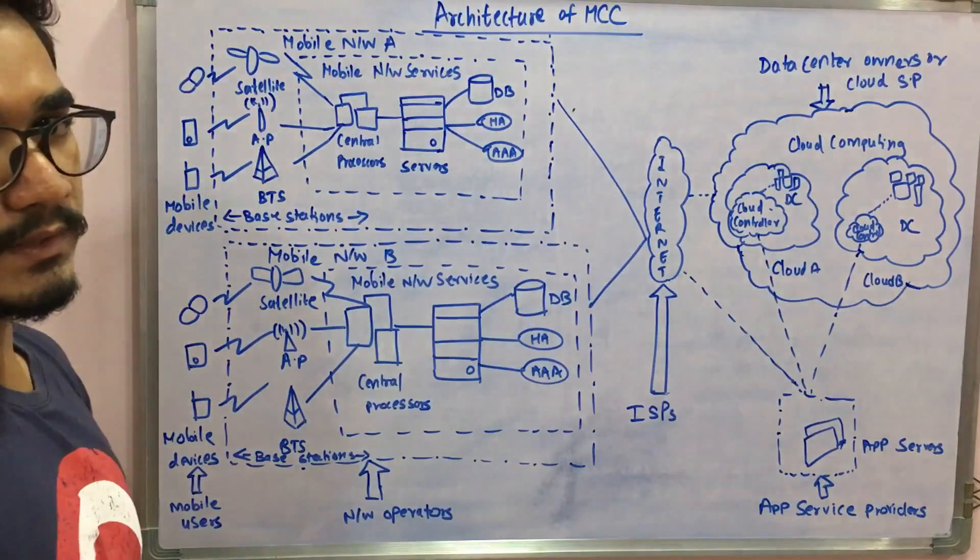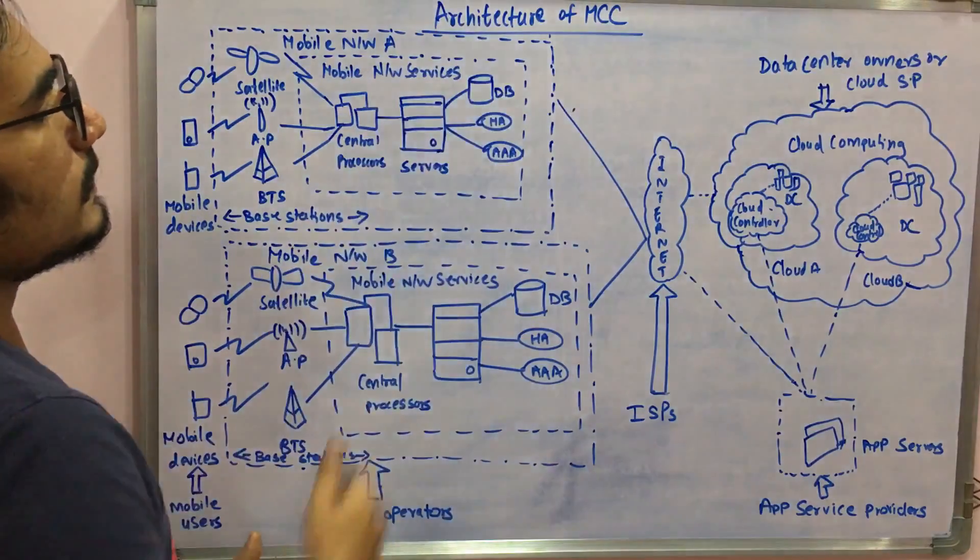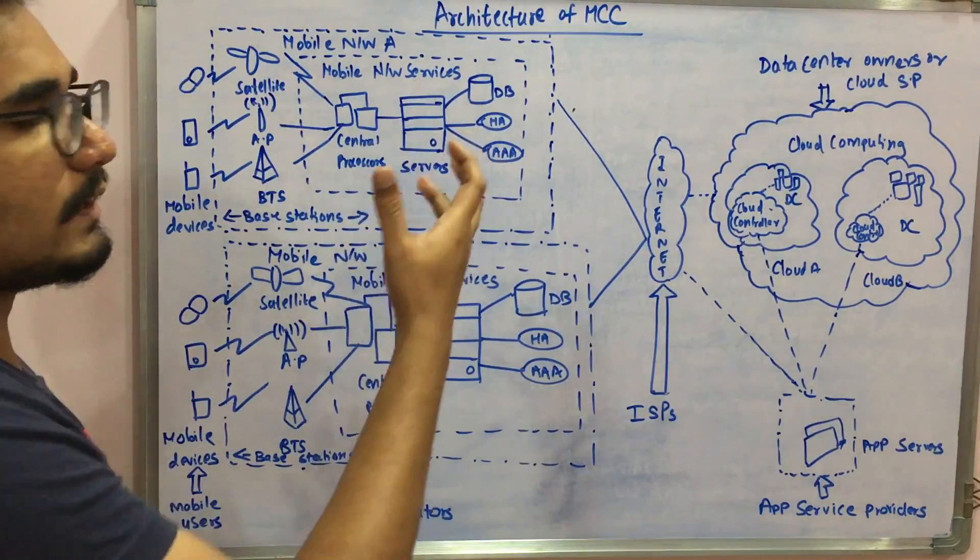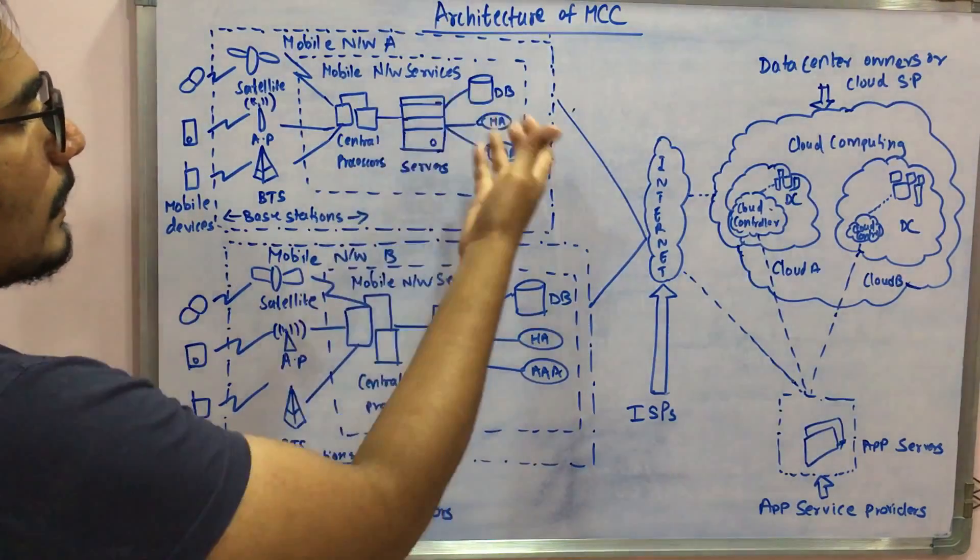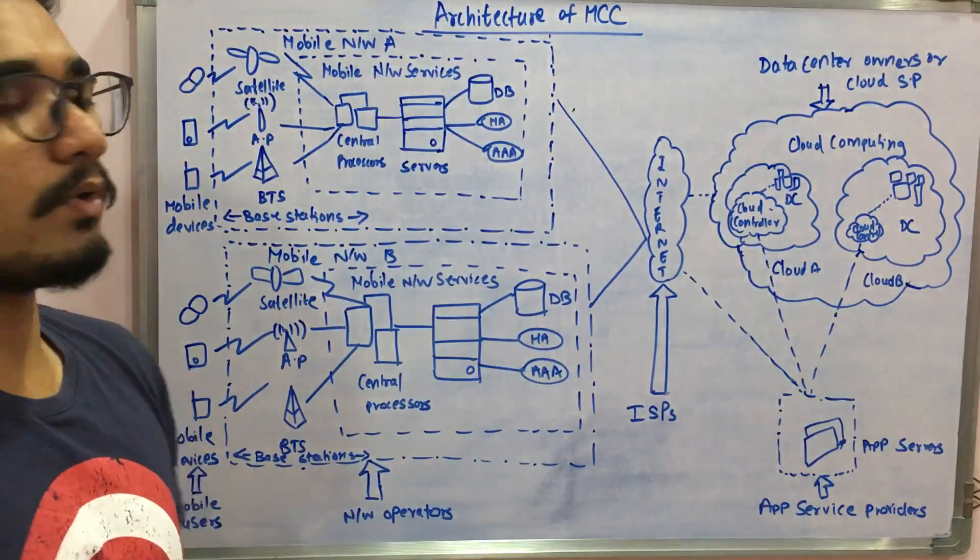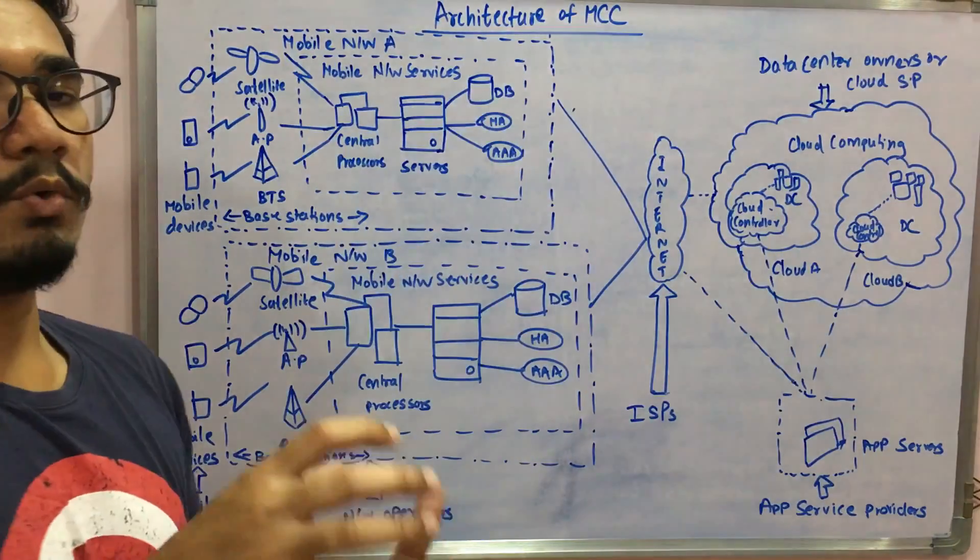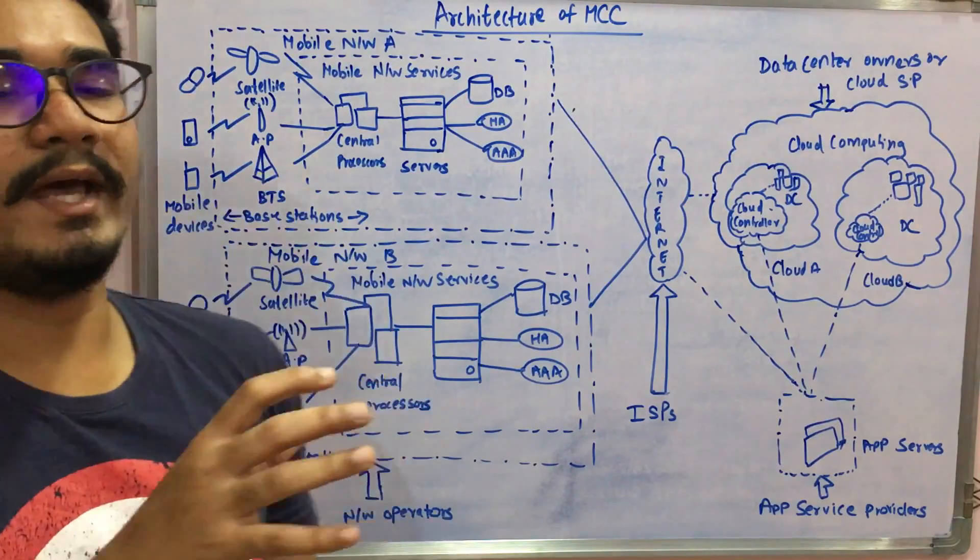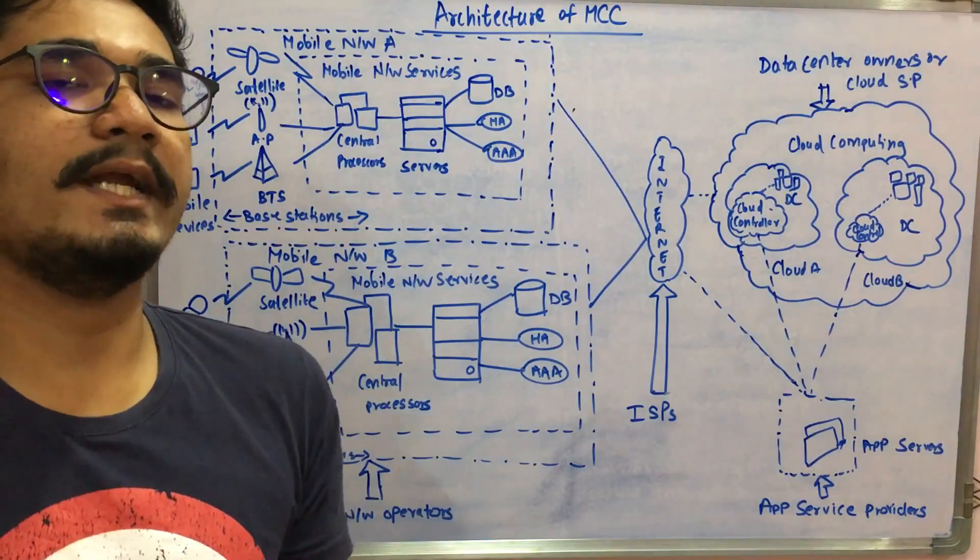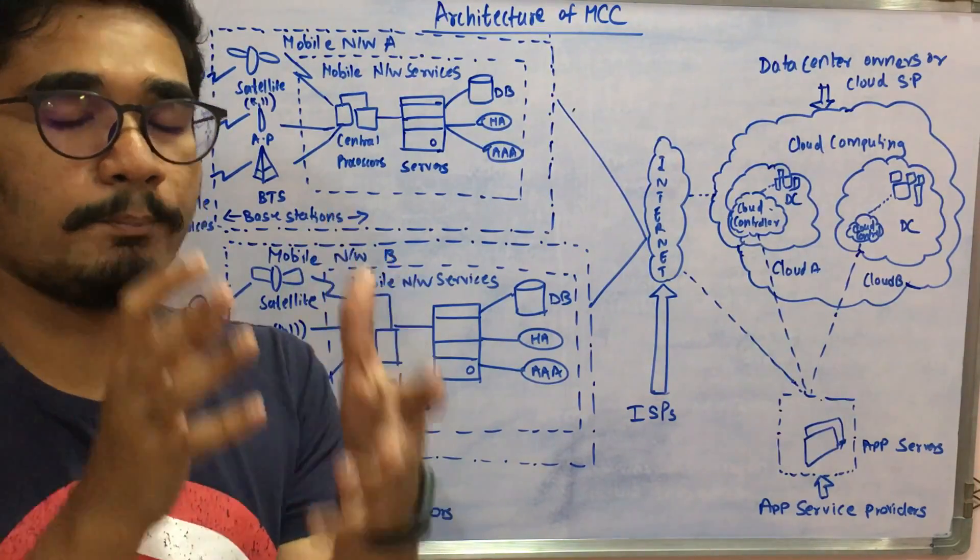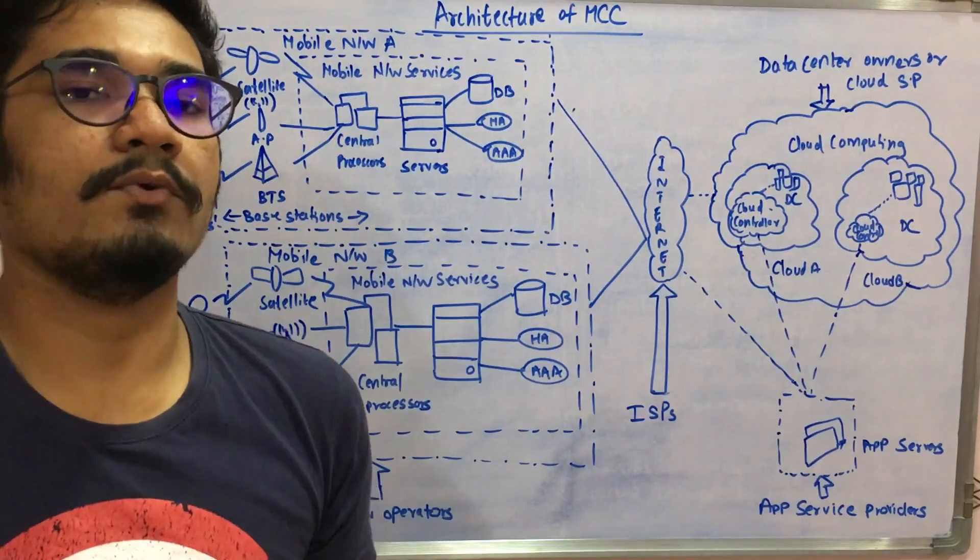The mobile network services include subscriber data that can be fetched from a nearby database using a query. Then home agent is there - home agent is basically a datagram protocol where it stores the IP of different mobile users. It tracks from which network and which device the data is coming from, whether it's a PDA, POS device, smartphone, laptop, or workstation.